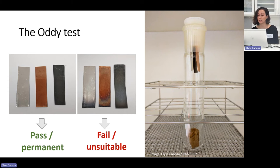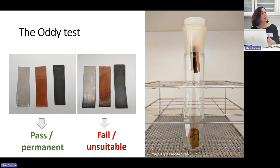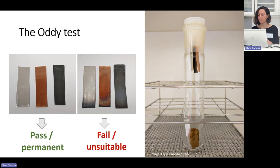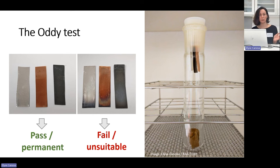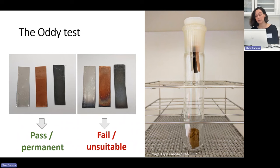If just one out of the three coupons shows heavy corrosion, that material is considered unsuitable for use. The term 'temporary' is a little bit debated. It's essentially used to suggest that the material has created small amounts of emissions and therefore could potentially be used for short periods of time, like temporary exhibitions.